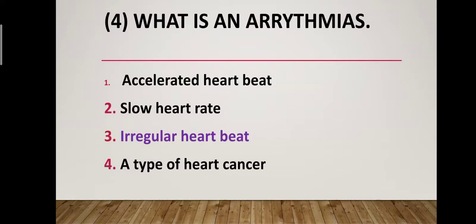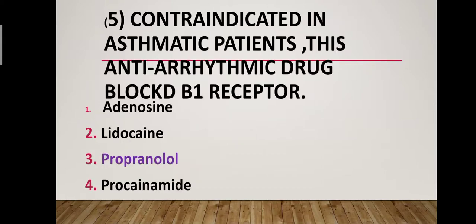Question number four: What is arrhythmia? Option one: accelerated heartbeat. Option two: slow heart rate. Option three: irregular heartbeat. Option four: a type of heart cancer. Correct answer is option three — irregular heartbeat. Arrhythmia is called an irregular heartbeat.